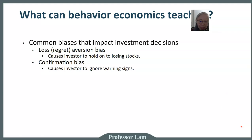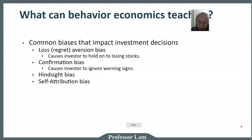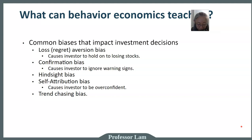Hindsight bias causes you to forget your mistakes and only recognize the winning calls. Self-attribution bias causes investors to be overconfident — instead of recognizing that profits may be pure luck, they believe they have the ability to choose the right investment. Combined with trend-chasing bias, this causes investors to buy overvalued stocks — whatever is the latest hottest stock.